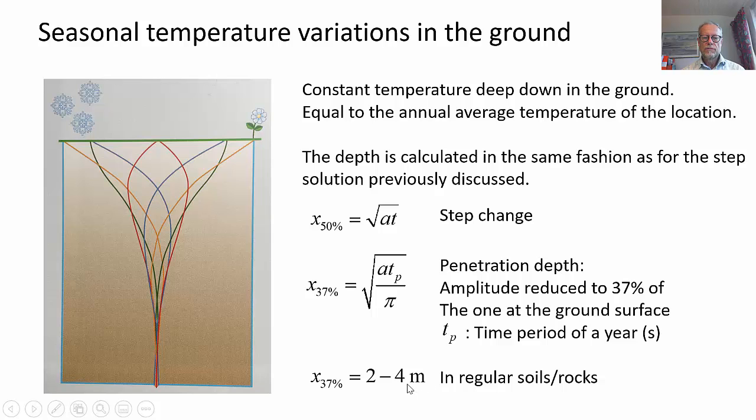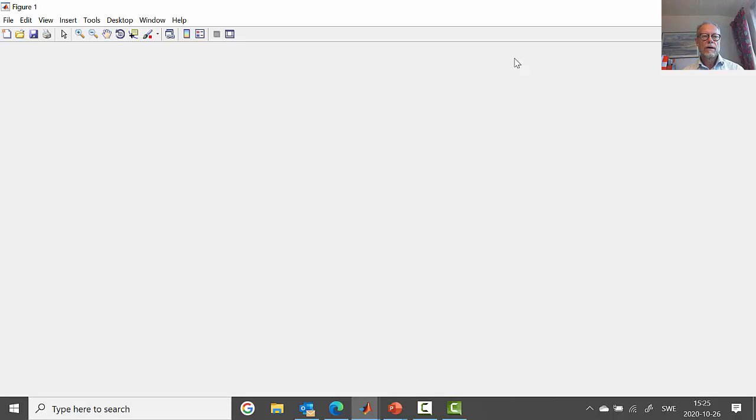For regular soils, it's 2 to 4 meters. We have this formula for x_37. So it's thermal diffusivity times the time period. And for these seasonal variations, the time period is one year. Divide by π and the square root of that. We get actually the penetration depth, the periodic penetration depth for this type of variations.